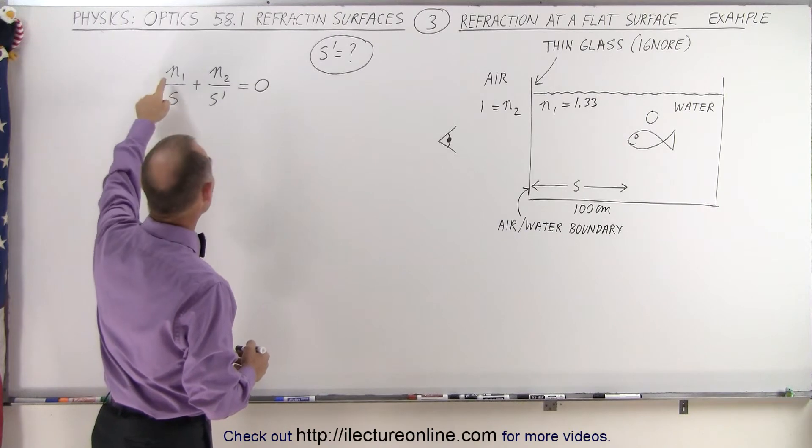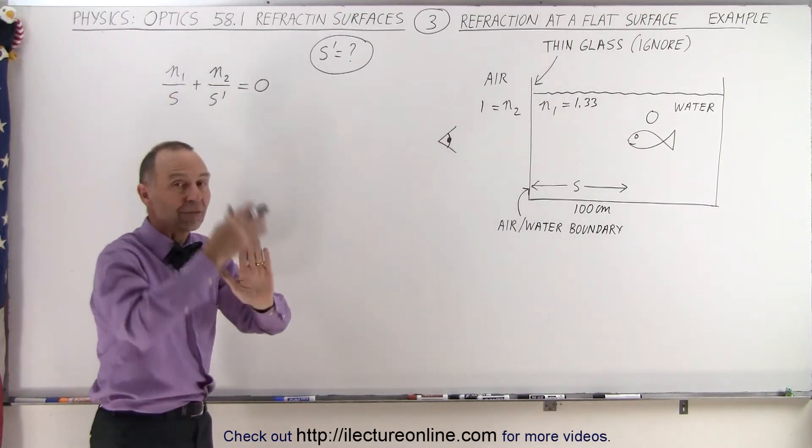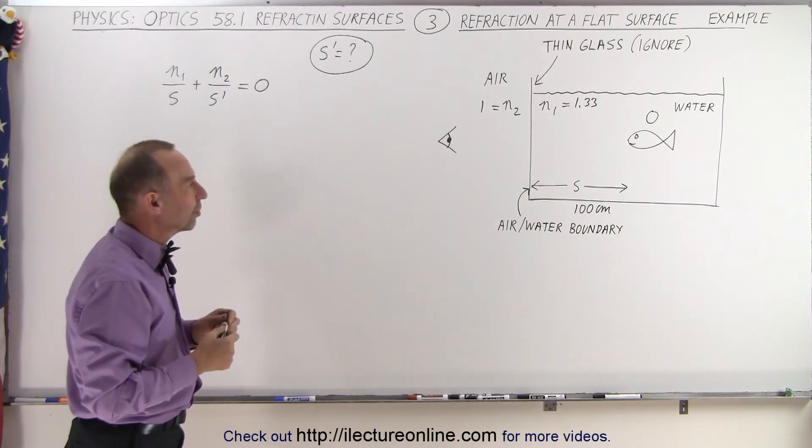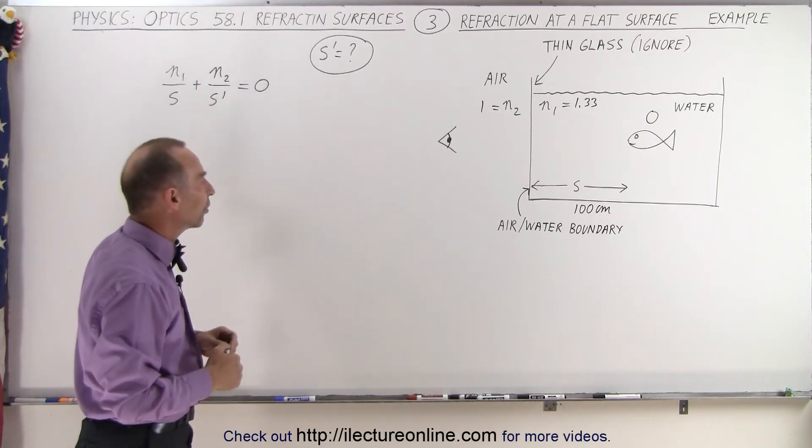So we still have the equation N1 over S plus N2 over S prime equals 0 because, again, it's a flat surface, a flat boundary. And the curvature is equal to infinity, or I should say the radius of curvature is equal to infinity, so the right side becomes 0.